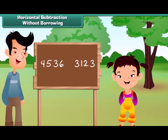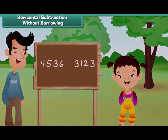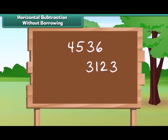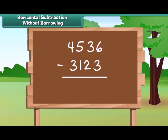Her father asked her to tell the difference between the numbers. Let us help her. We write the bigger number above and smaller number below it. Now subtract the numbers at 1's place, the 10's, next 100's, and at last 1000's. Thus, the answer obtained is 1413.